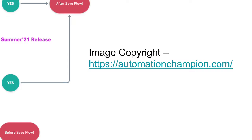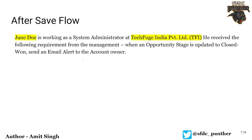Now that we've seen when to use before or after flow, let's talk about our scenario. Dunno is working as a system administrator at TechFuels India Private Limited. He has received a requirement from his manager: whenever an opportunity stage is updated to Closed Won — meaning the previous value was not Closed Won and it is being changed to Closed Won — he needs to send an email to the account owner.